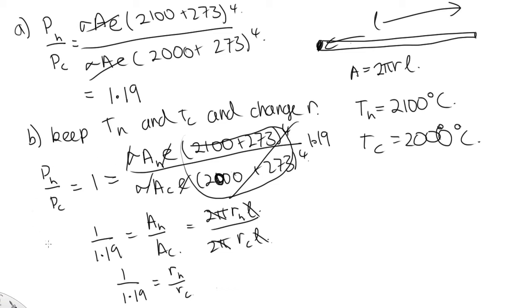So this tells us that the radius for the cold filament needs to be 1.19 times the radius for the hot one. So by a factor of 1.19.